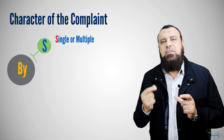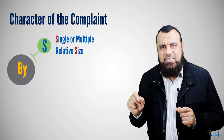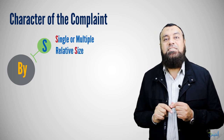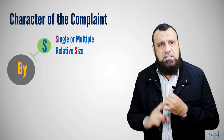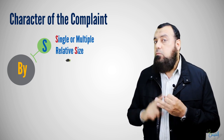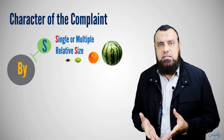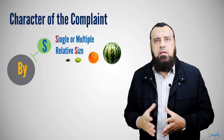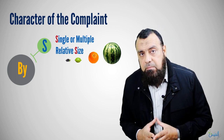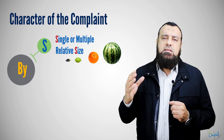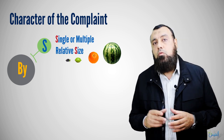The second character under the word S is the relative size. Is it olive size, lemon size, orange size, melon size? Whatever it is — the relative size. That is the second group of characters of the complaint.